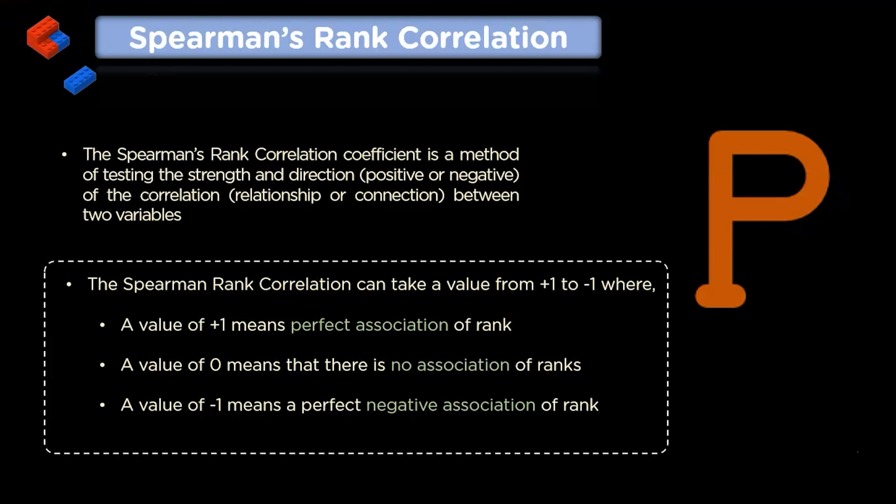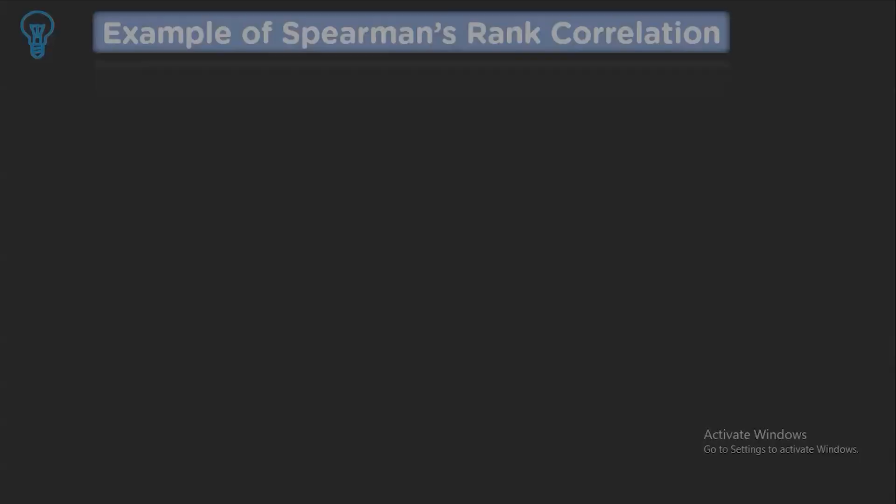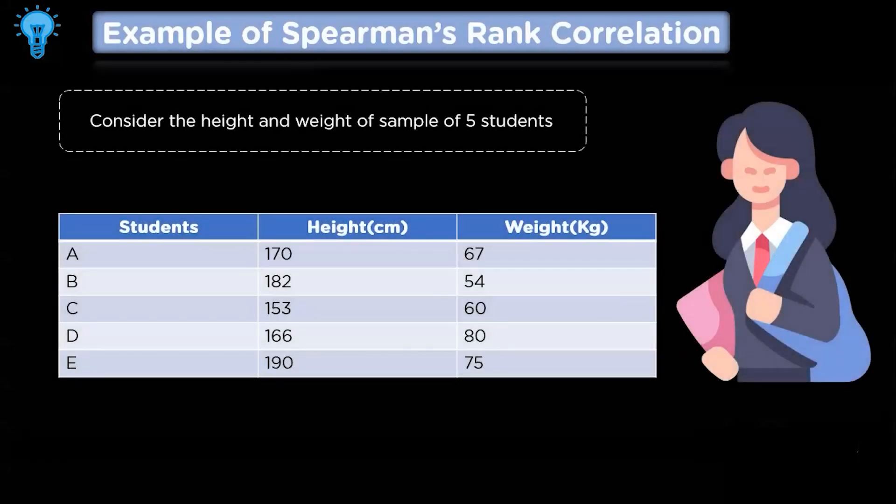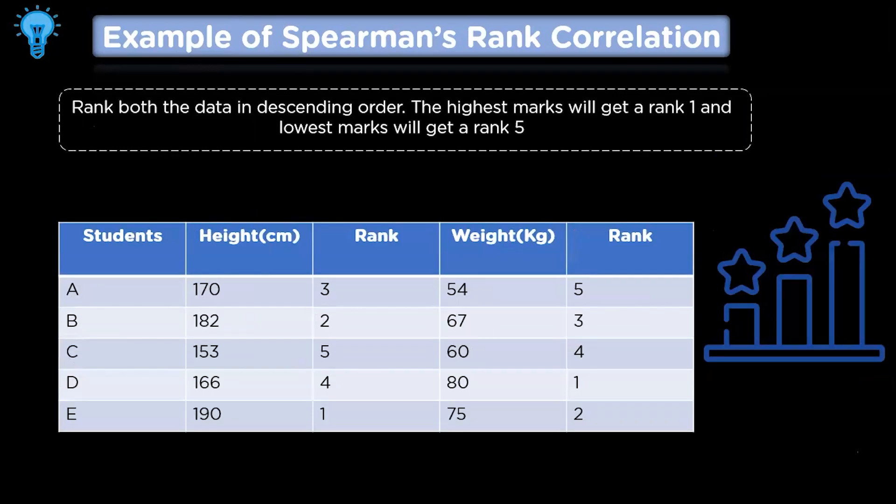Now let's move on to an example to understand this concept better. Consider the height and weight of a sample of 5 students as shown here. The first step would be to rank the data in descending order. The highest marks will get a rank of 1 and the lowest marks will get a rank of 5.